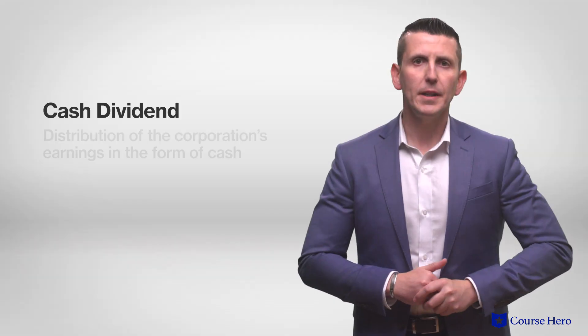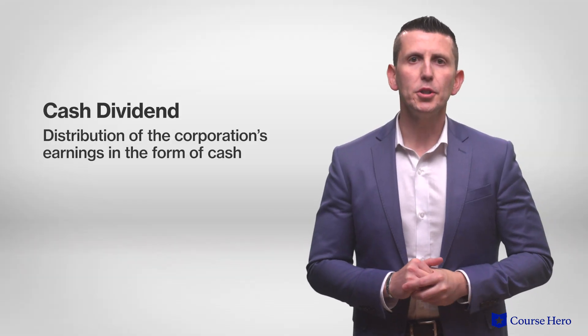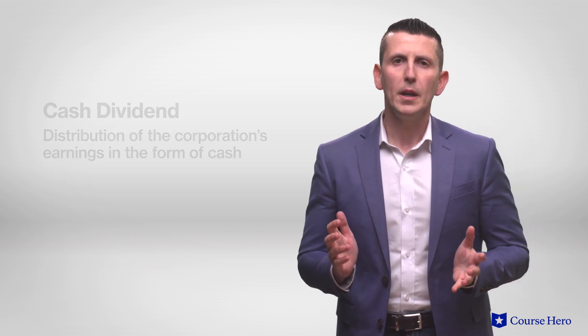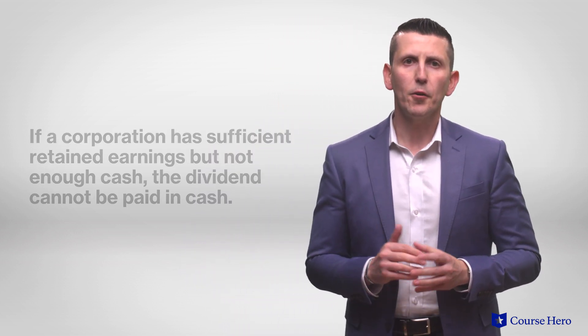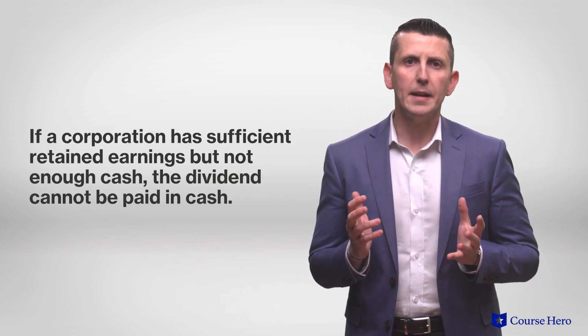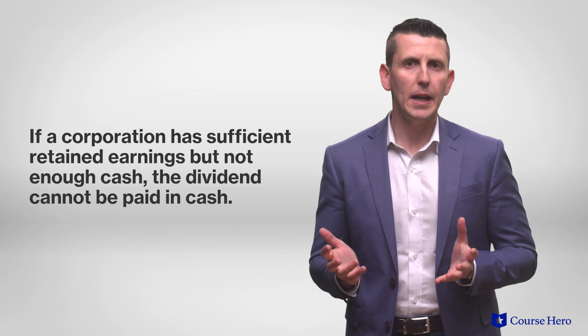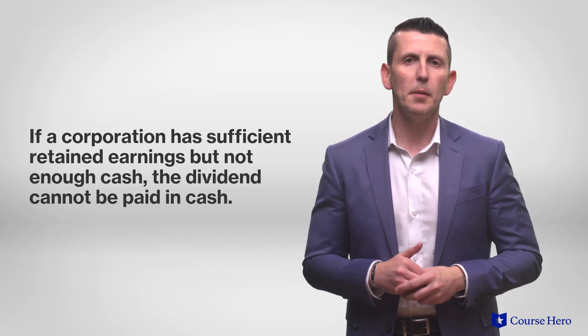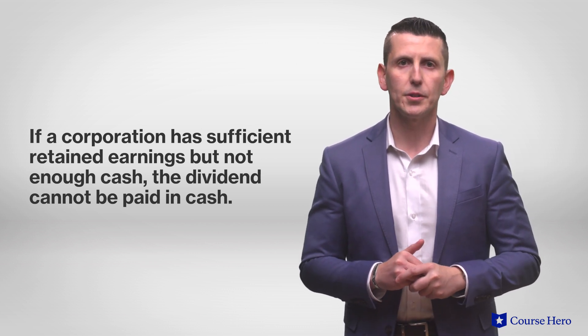A cash dividend is a distribution of the corporation's earnings in the form of cash. This means that the company must have a sufficient balance in the retained earnings account as well as in the cash account. If a corporation has sufficient retained earnings but not enough cash, the dividend cannot be paid in cash.